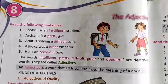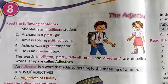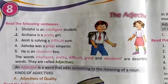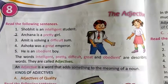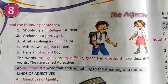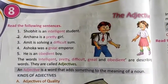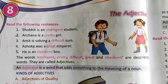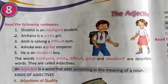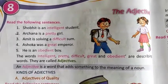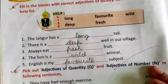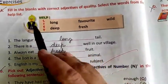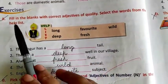Hello children. In the previous video I have explained you lesson number 8, the adjective as well as the kinds of adjectives. Now we are going to do the book exercises of this lesson. So take out page number 40 of your English grammar books. On page number 40 we are going to start with exercise A.